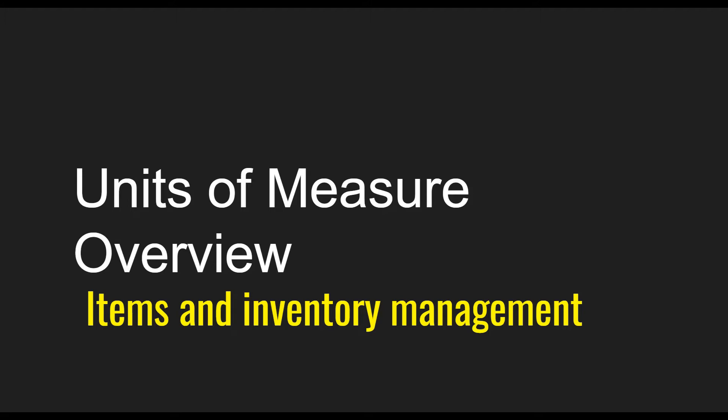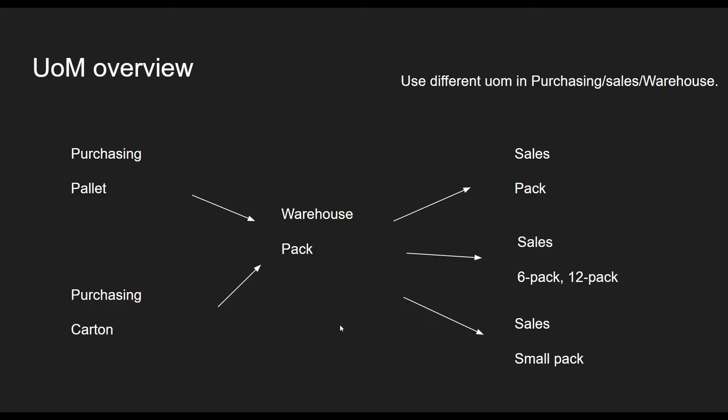Let's assume your company is buying and selling a product in different units of measurement. For that, you have to define different purchase, sales, and storage units in your item master data for those particular items. For example, paper may be purchased in cartons or pallets and then sold in packages or six packs. One item can have different ways of buying and selling.